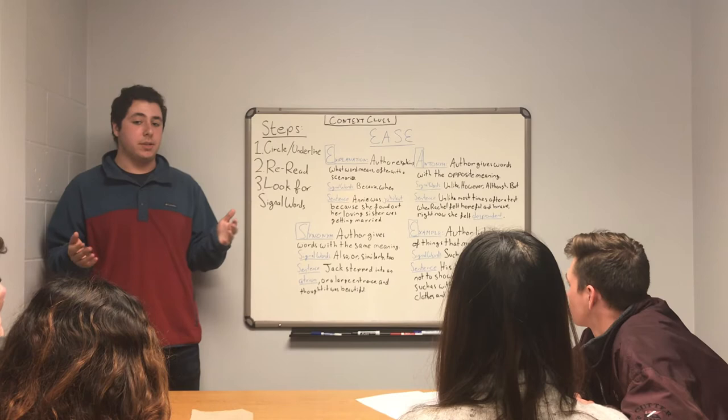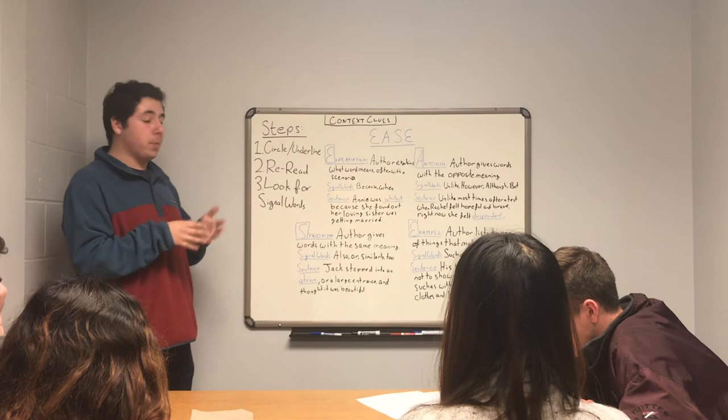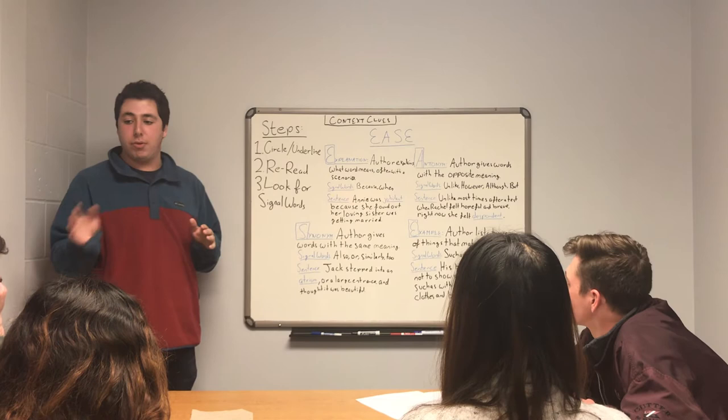So when you come across a word you don't understand, the first step is to circle and underline it. This is a super important step because when you're reading a complicated text, there can be a lot of words you don't understand, and underlining a word makes sure you don't get distracted by other information and can focus on that word.